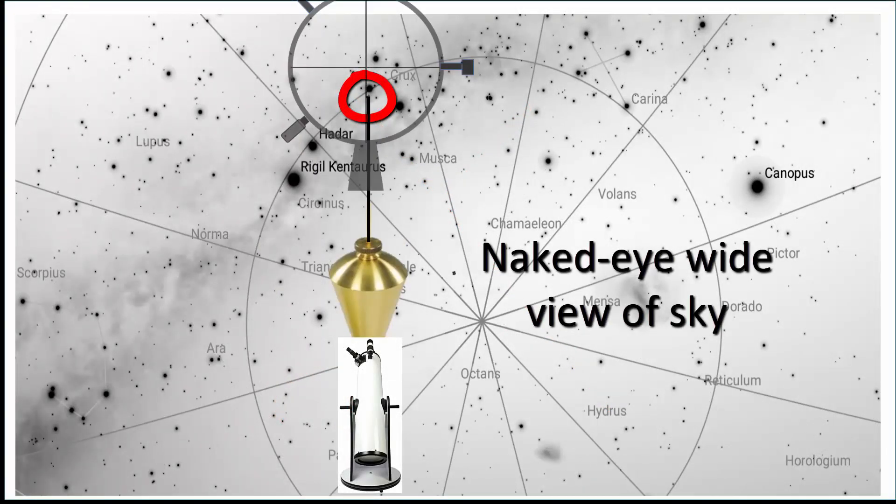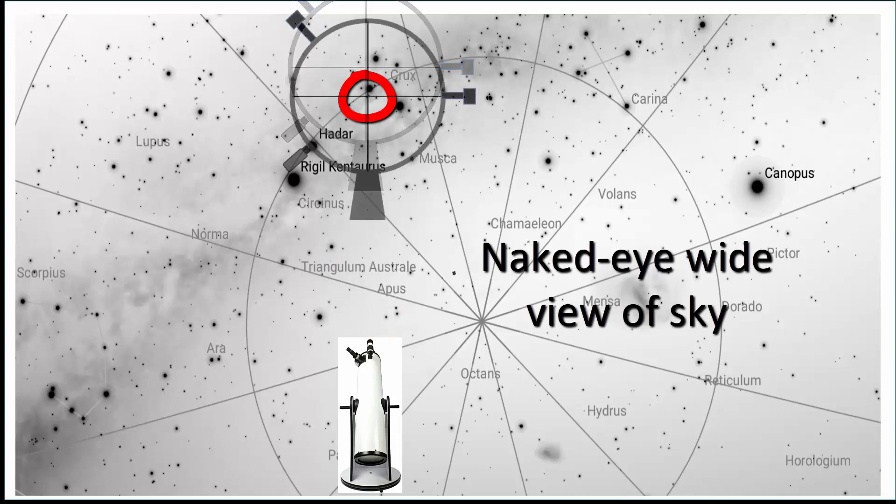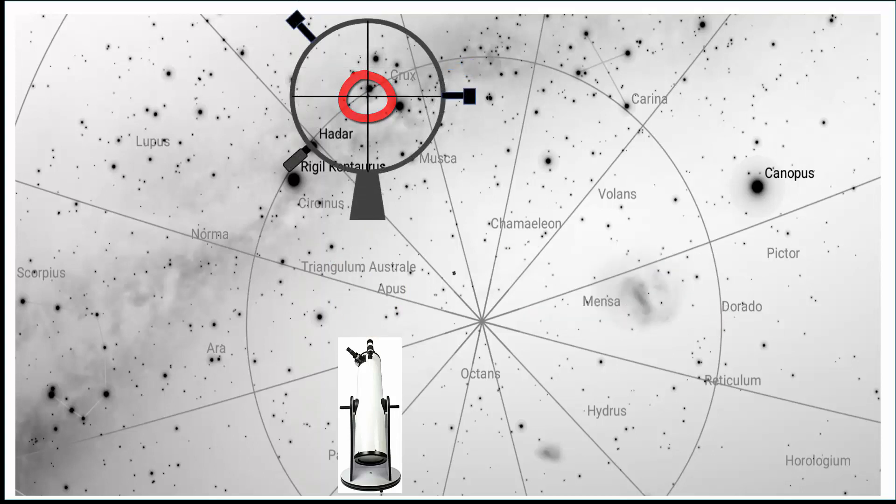Then using the finder scope, move the telescope up or down to center the object under the finder scope crosshairs. If the target is too faint to be seen through the finder scope, you can conduct the up-down search directly through the main telescope eyepiece. However, occasional success is accompanied by frequent frustration when trying the hope method.